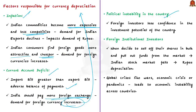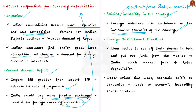The third factor is political instability, which causes foreign investors to lose confidence in the investment potential of the country, causing them to pull out from the Indian market and the country loses out on foreign exchange, again leading to rupee depreciation. The fourth factor is when foreign institutional investors sell off shares in bulk and pull out funds, causing the stock market to fall and the value of rupee to fall. The fifth factor is a global crisis — wars, economic crises, or pandemics like the present one — which leads to economic instability across countries and affects the value of rupee.